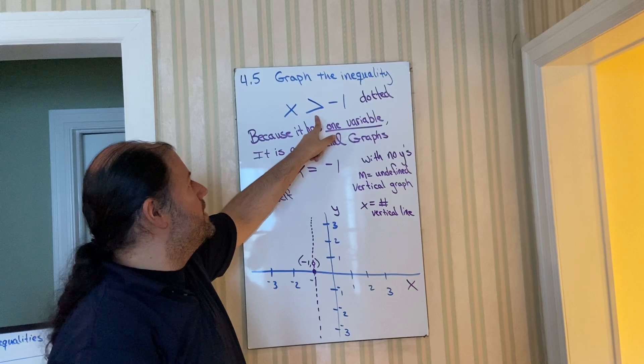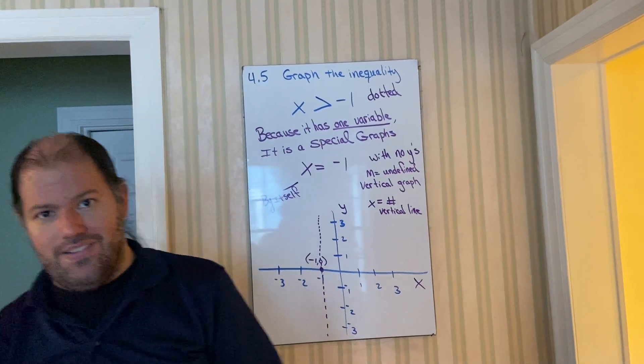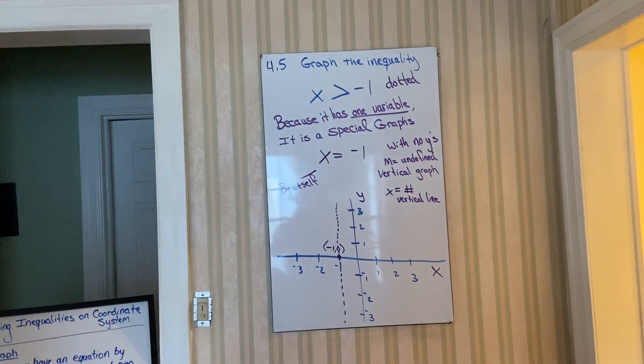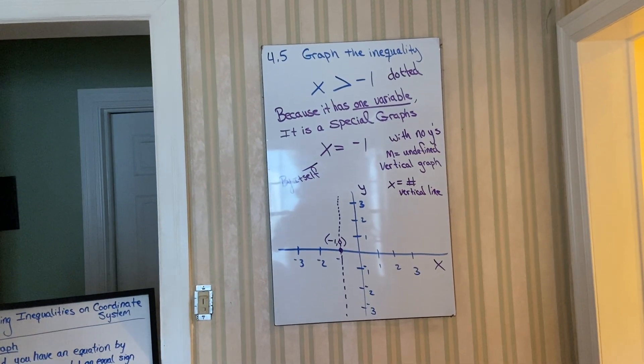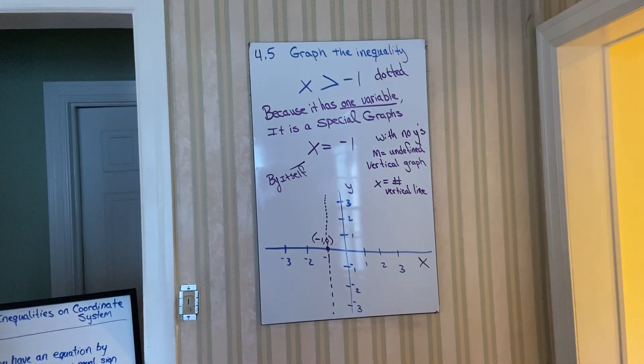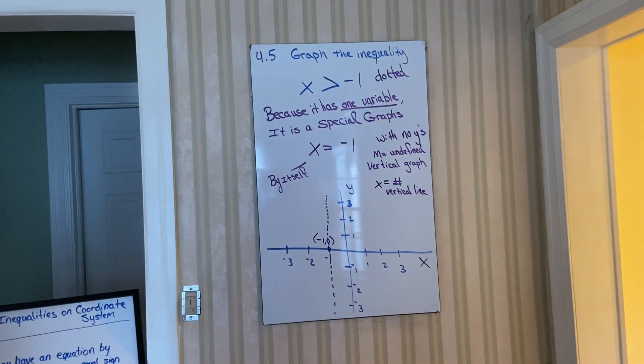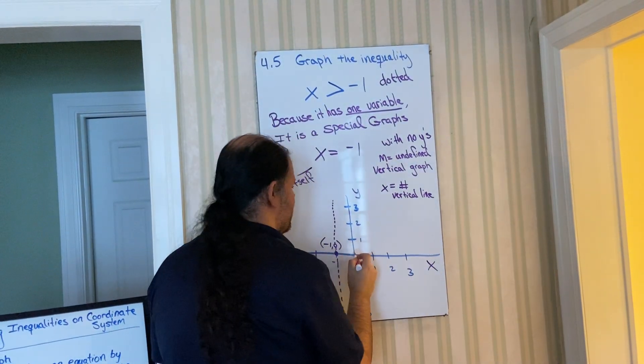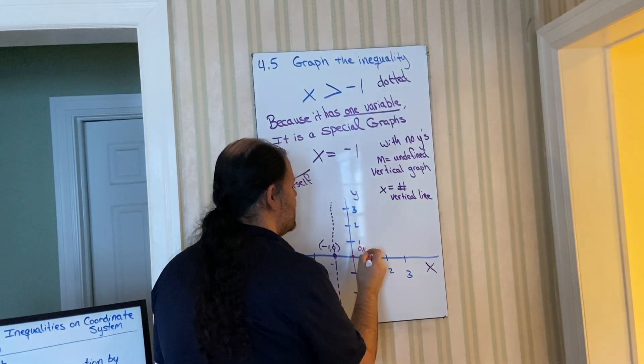But because it's inequality, we have to do shading. Now shading hasn't changed. Shading says, okay, now that you have the graph, you're going to pick any point that is not on that boundary line. So you know the point that I love to use right here. Zero, zero.